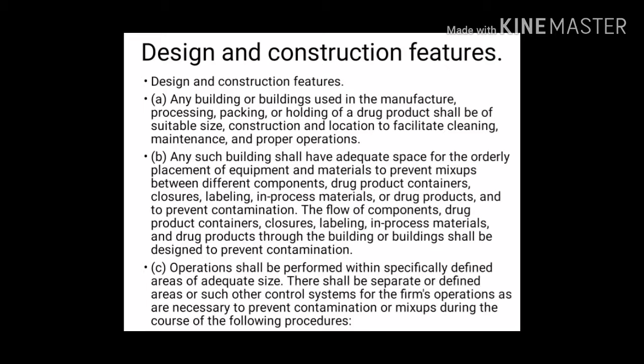Design and Construction Features: Any building used in the manufacture, processing, packing, or holding of a drug product shall be of suitable size, construction, and location to facilitate cleaning, maintenance, and proper operations. Any such building shall have adequate space for the orderly placement of equipment and materials to prevent mix-ups between different components, drug product containers, closures, labeling, in-process materials, or drug products, and to prevent contamination. The flow of components and drug products through the building shall be designed to prevent contamination. Operations shall be performed within specifically defined areas of adequate size.